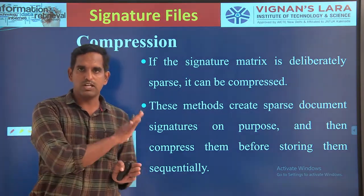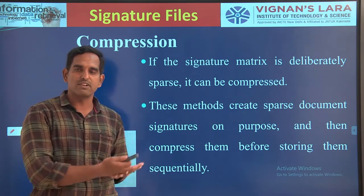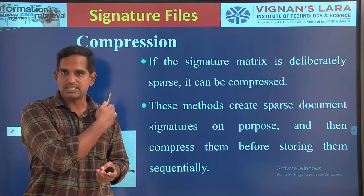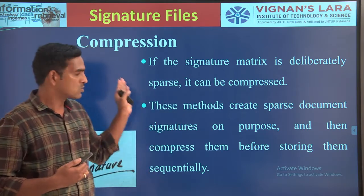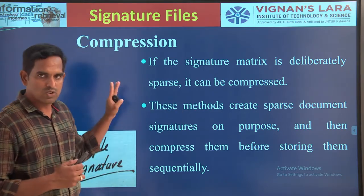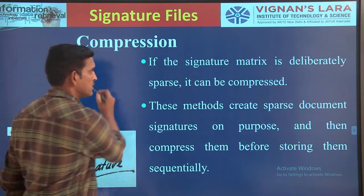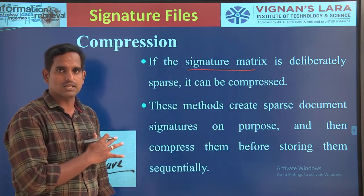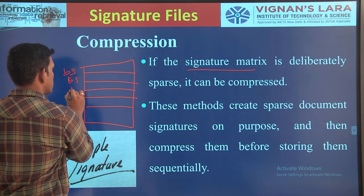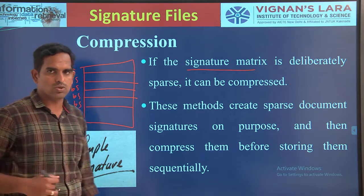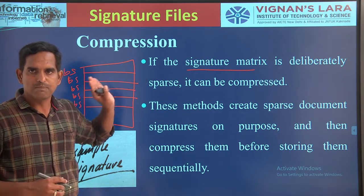In this session, we will look at the introduction to the compression part. In further sessions we will look at how this compression will be implemented — the basics of compression and what are the various types of compression signature files. We have two methods: bit block compression (BBC) and variable bit block compression. Whatever the signature file or signature matrix you are having — the signature matrix is nothing but your series of block signatures, where each block signature is stored sequentially in the form of rows — since it is formed in rows and columns, we call it the signature matrix.